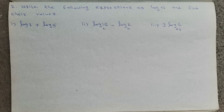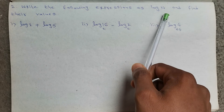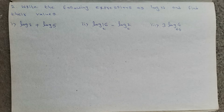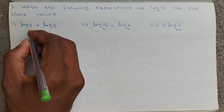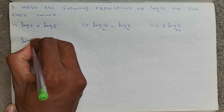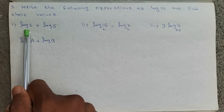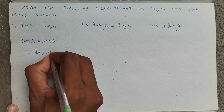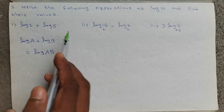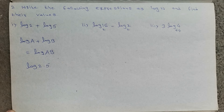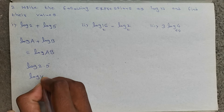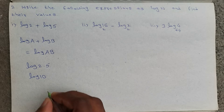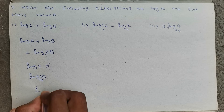Okay, let's move to the second bit. Write the following expressions as log n and find their values — meaning express as a single logarithm. Log 2 plus log 5 is in the form of log a plus log b. Log a plus log b equals log (a·b). So log 2 plus log 5 will be log (2 into 5), which is log 10. If the base is not written, the standard base is 10. So log 10 base 10 value is 1.